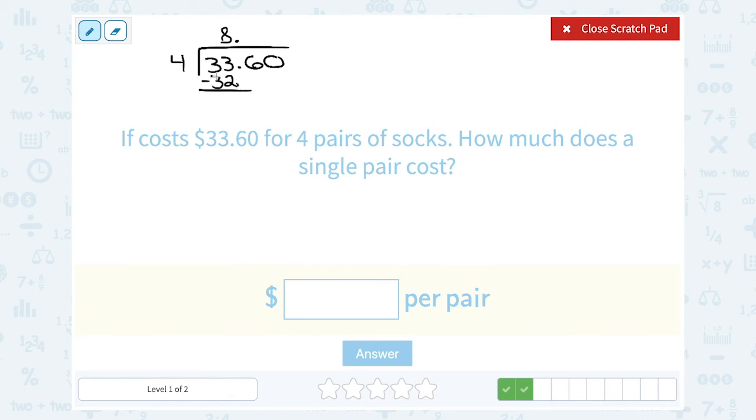Now if we subtract 33 minus 32 is one, and then we would bring down our next digit of six. How many times does four go into 16? Four times. That gives us exactly 16.